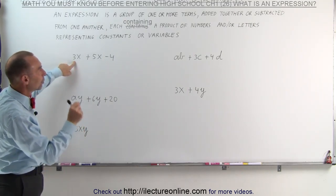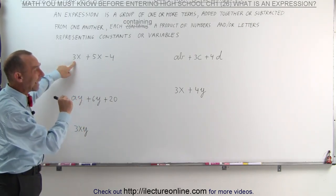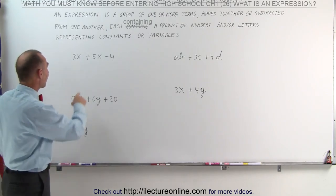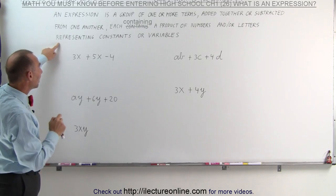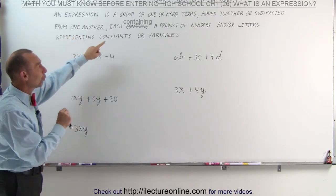Each of these terms contains a product of numbers and or letters. So here we have 3 times x, here we have 8 times y. And those letters represent either constants or variables.